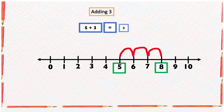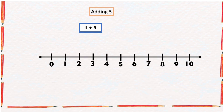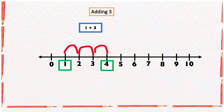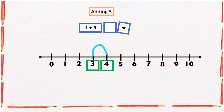Here we have one plus three. To find the sum, we can start from number one and add three numbers forward: one, two, three, which ends at number four. But this is actually a long way. We can instead start from the bigger number, three, and add just one number, which still gives us the same answer: four.